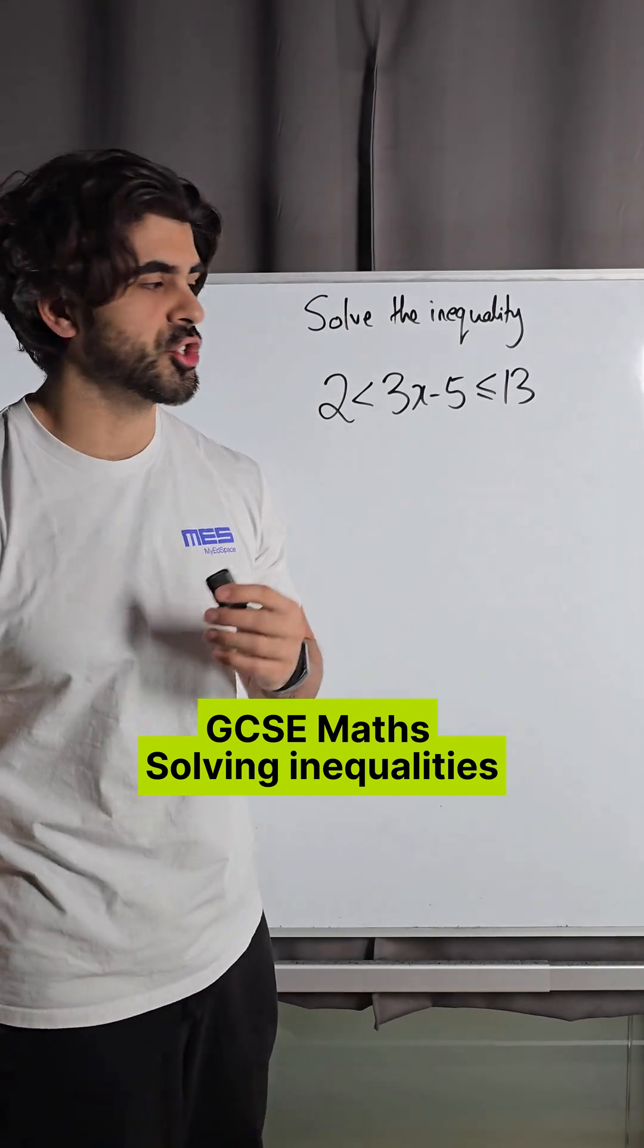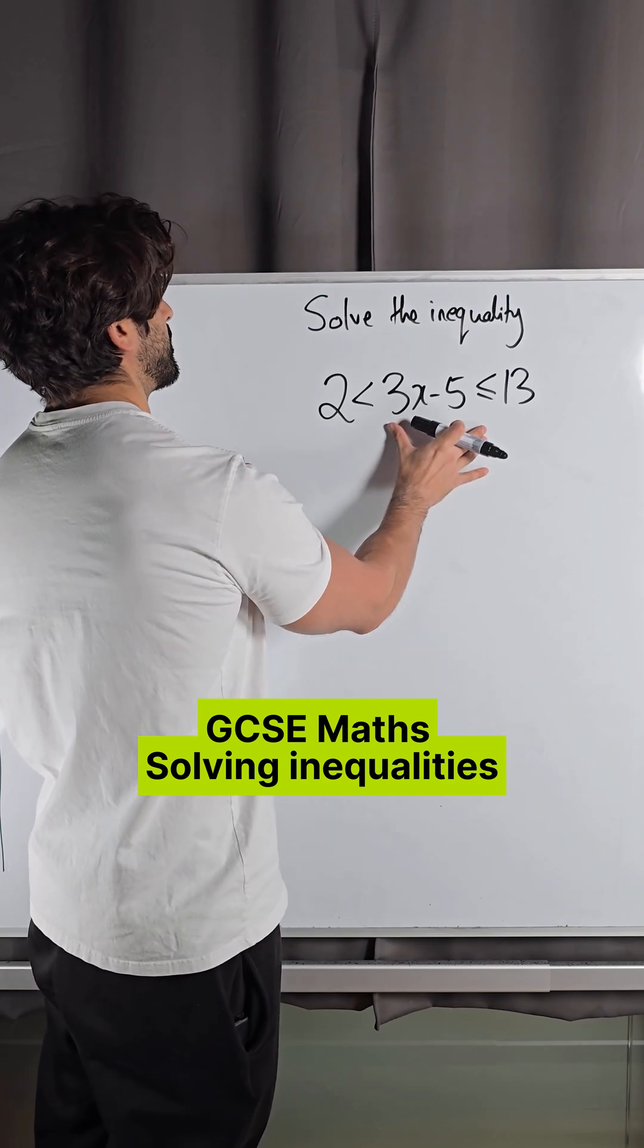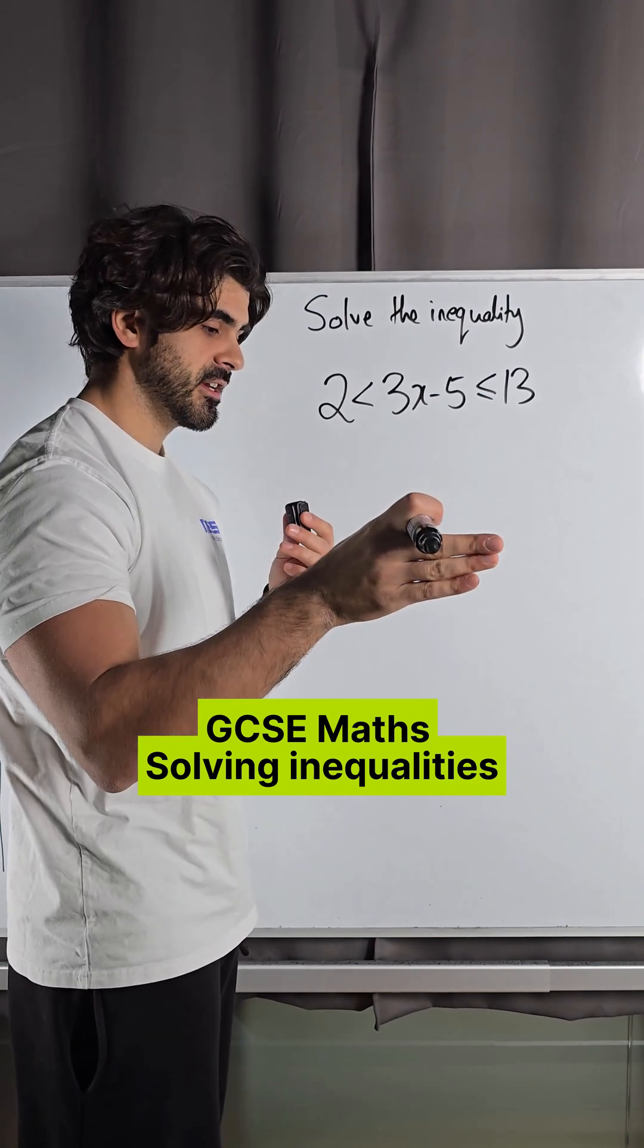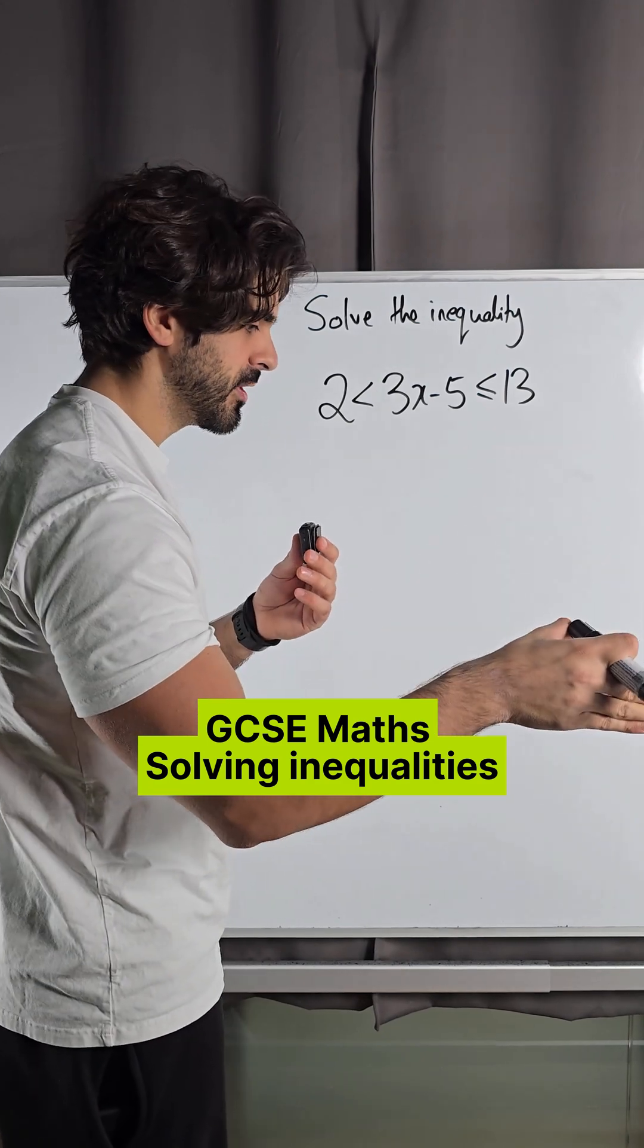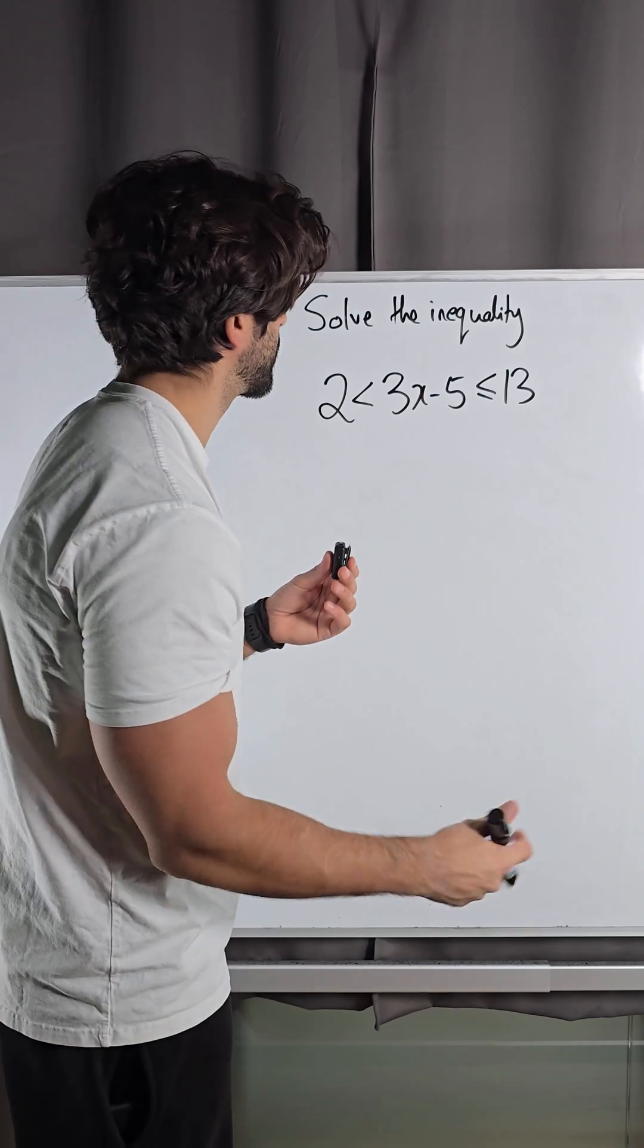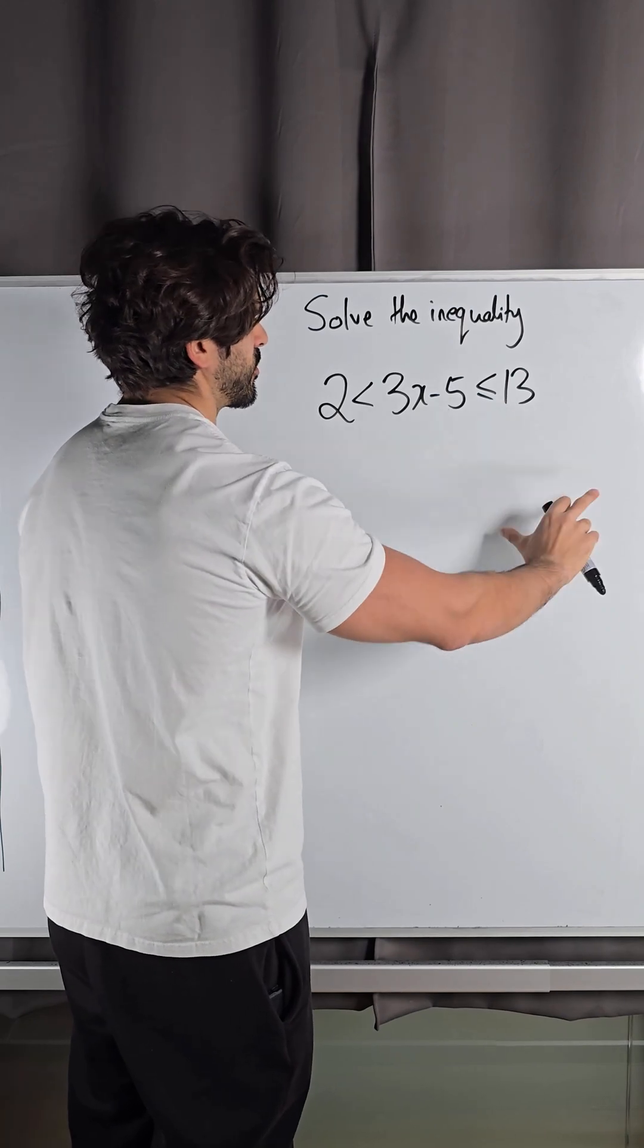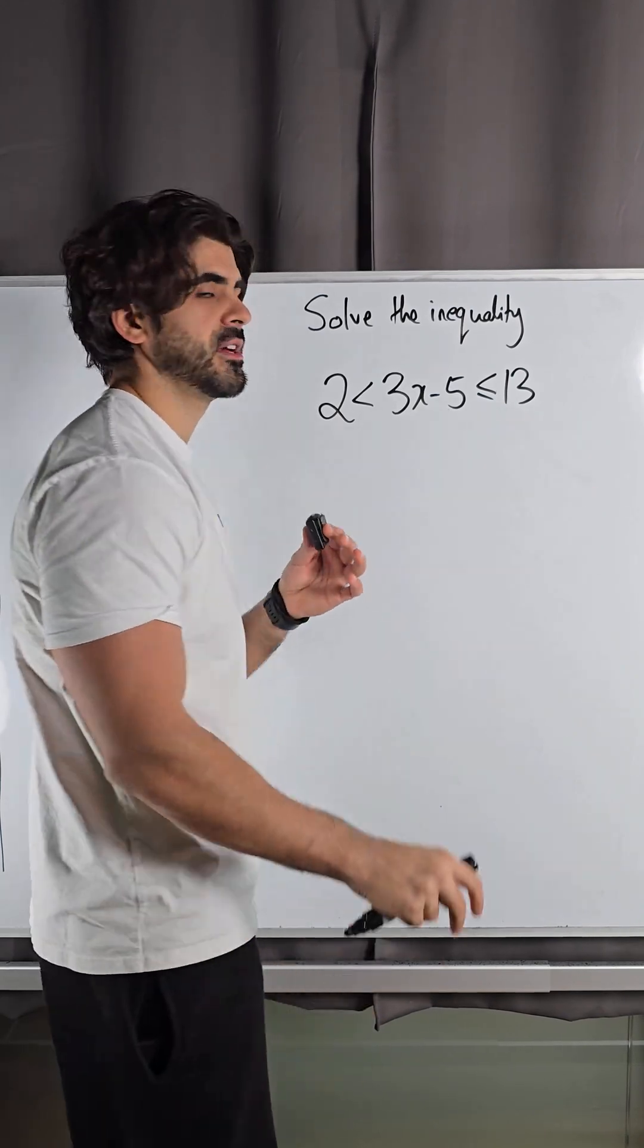I was teaching my GCSE students the other day and we were looking at inequalities that have between statements, and I was really driving home when do we need to split the inequality. Because students were saying initially, 'Oh yeah, you do this separately and you do this one separately and you solve them separately,' but you don't always need to do that, especially for something like this.